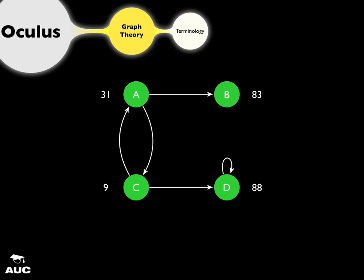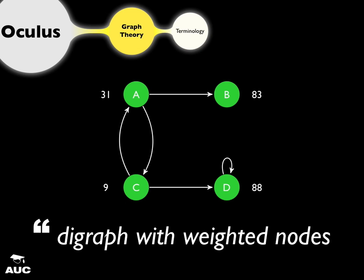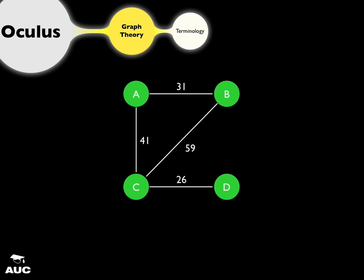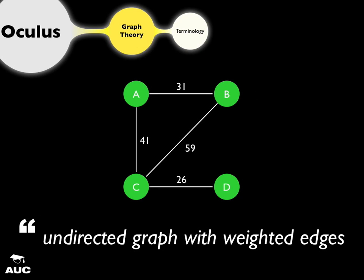You can associate a label, weight, or cost factor to a node — for example, how much it costs to visit that node. I use this a lot in Oculus to estimate the cost factor or weight normally associated between traveling from one key point or node to another.